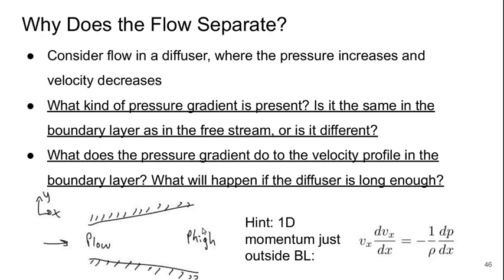So what kind of pressure gradient is present here? Is it the same in the boundary layers near the walls as it is in the free stream near the middle, or is it different? And what does that pressure gradient do to the velocity profile within the boundary layers? And what will happen if the diffuser is long enough?